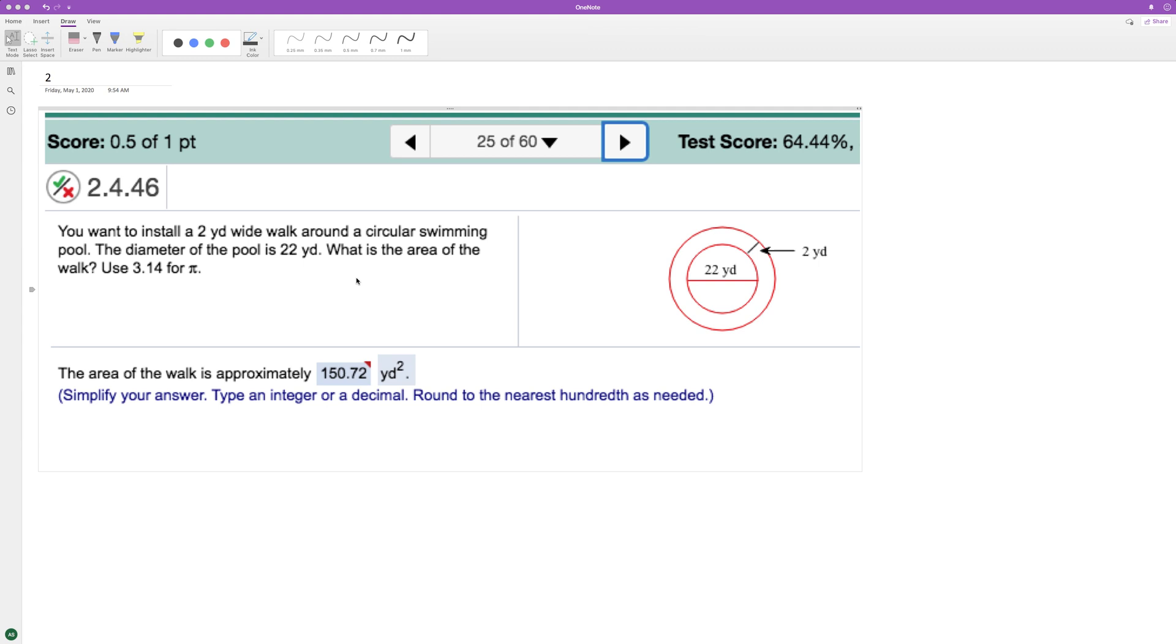We want to install a walkway around a pool and find the area of that walkway. So to set this up, I've got the solution here. This is technically correct. What we do is find the complete circle area and then subtract this inner circle.